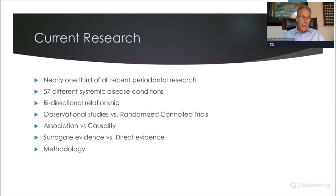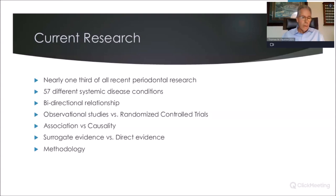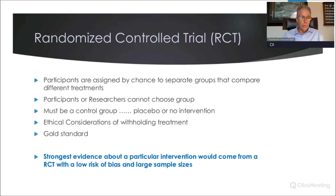Observational studies can be very good, but we have to realize that while they were the first to link smoking and lung cancer, they also linked hormone replacement therapy in menopausal women to a reduction in heart disease — which was later debunked by randomized controlled trials. So we have to be cautious about applying causality versus simply association. And then there's surrogate evidence versus direct evidence — edentialism versus actually measuring periodontal disease — as well as variability in study methodology.